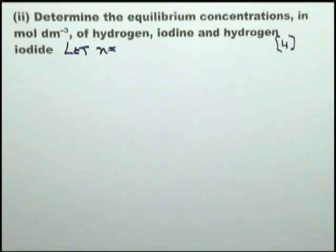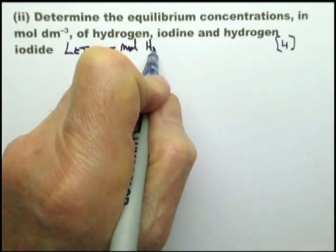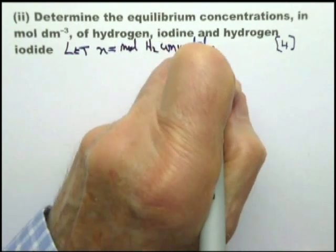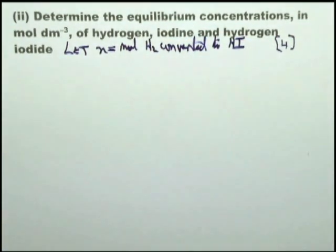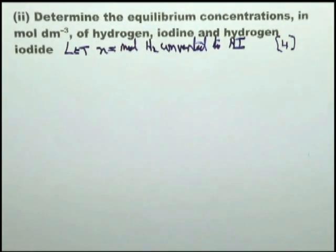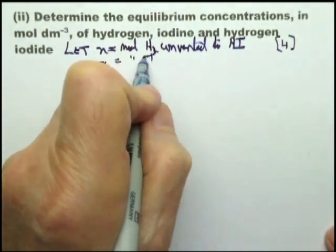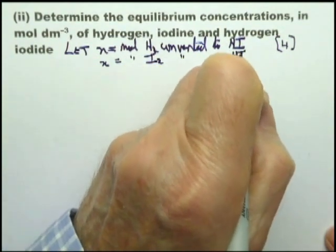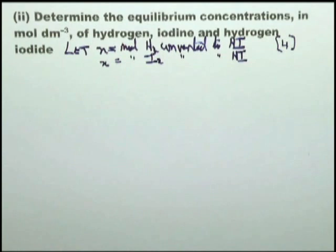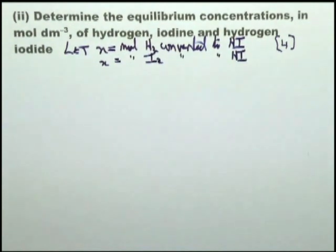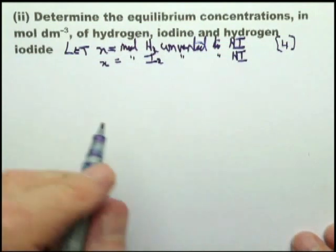The examiners in their answer said, let x be the number of moles of hydrogen converted to HI. You may or may not even have thought of that one. That also means x equals the moles of iodine converted to HI, because the equation uses the same quantity of iodine and hydrogen. And therefore, the moles of HI are 2x. Therefore, moles HI at equilibrium equal 2x.